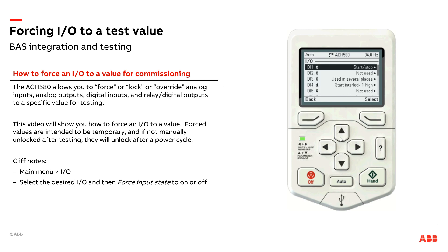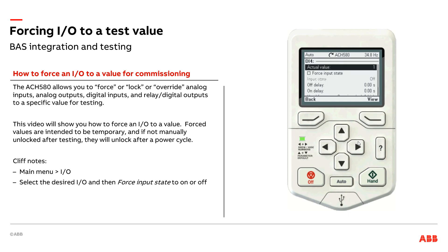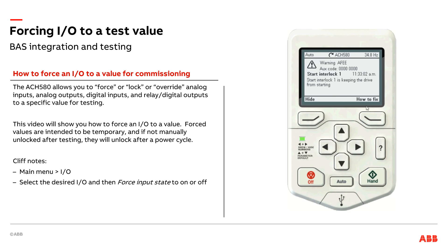Going back, let's look at digital input 4 — my safety. Let's say I wanted to simulate what happens if my safety were to open. Instead of taking the cover off, taking the wires out, or physically tripping a safety, I can simulate it here. I'll check this box and simulate it to be off. Immediately I get a 'start interlock 1' message letting me know that the safety is keeping the drive from being able to run. I'll go ahead and unselect that to release it back to its normal status.